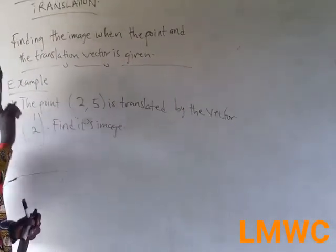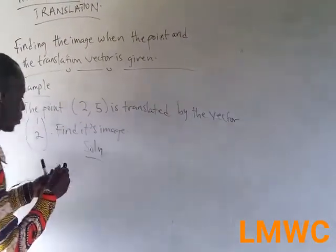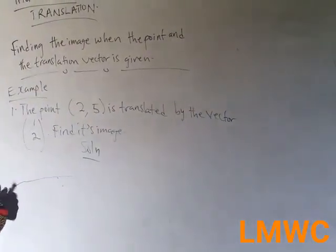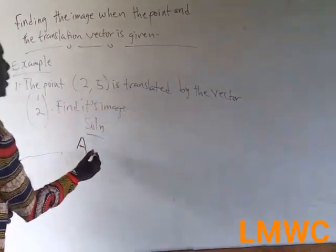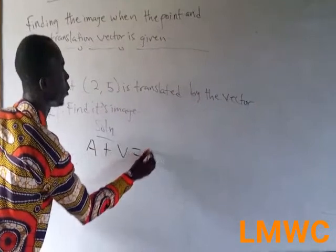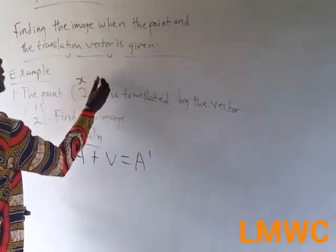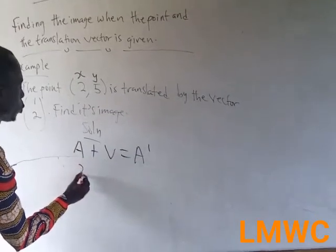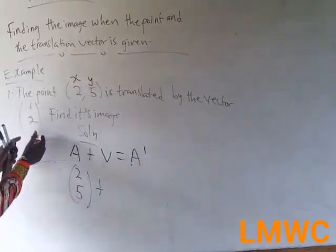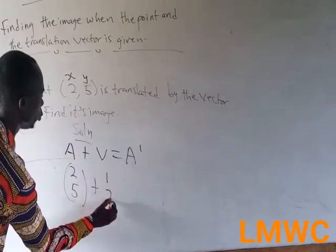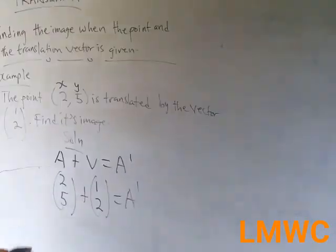The first thing you are supposed to do is write your formula. The formula is A plus V equals A prime. We know this is our x and this is y. So it becomes (2, 5) plus the translation vector, which is (1, 2), equals A prime.